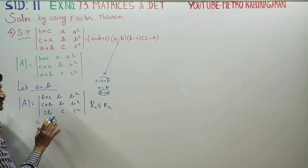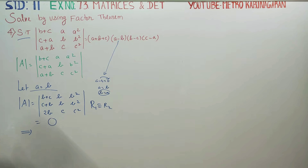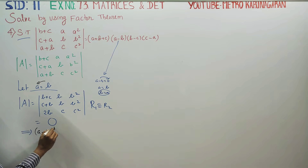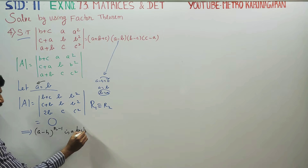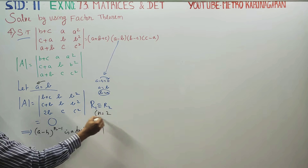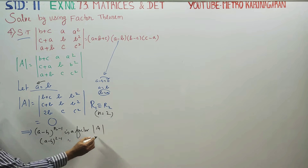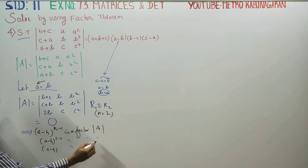If the answer is zero, this implies (a−b) is a factor. By the factor theorem, if n rows are equal, (a−b) raised to power (n−1) is a factor of the determinant. Since 2 rows are equal, 2−1 equals 1, so (a−b) to the power 1 is a factor of determinant A.